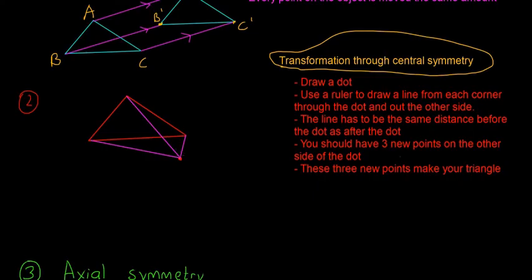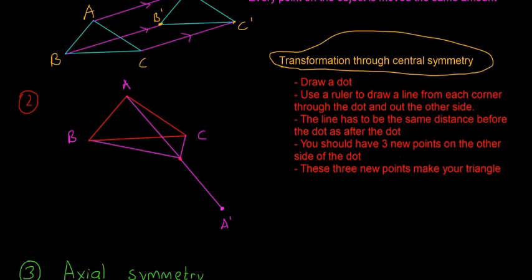Then you draw to the dot, and then you keep it going through the dot and out the other side. It has to be the same distance — say from point A to the dot, and then out the other side has to be the exact same distance. So I'll call this one B and this one C. Starting with A: it's going to be in the exact same line and the exact same distance out as well. So now we have A dash — it's gone straight through the point. Then C dash and B dash as well — the line goes through and out the other side, the same distance before the dot as after the dot.